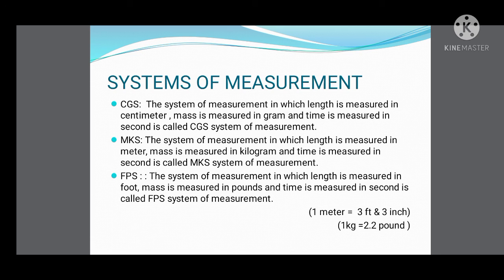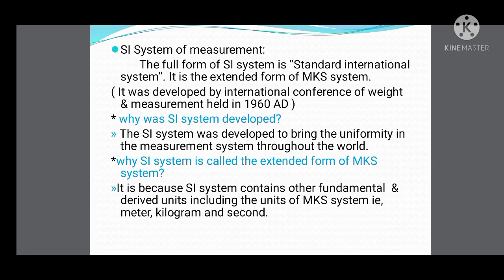One meter is equal to three feet and three inches, and one kilogram is equal to 2.2 pounds. It is easy to remember these systems from their names: in CGS, C is for centimeter, G for gram, S for second; in MKS, M is for meter, K for kilogram, S for second; and in FPS, F is for foot, P for pound, and S for second.